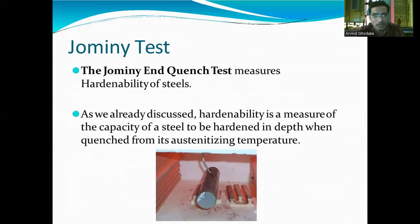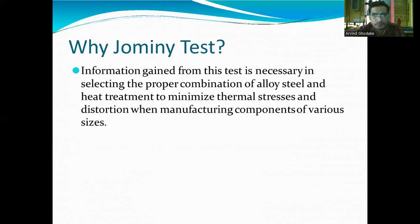In this diagram you can clearly see the standard specimen for the Jomini End-Quench test kept in the furnace. It is heated to the austenitizing temperature of 953°C. The Jomini test is performed because the information gained is necessary for selecting the proper combination of alloy steel and heat treatment to minimize thermal stresses and distortions when manufacturing components of various sizes.